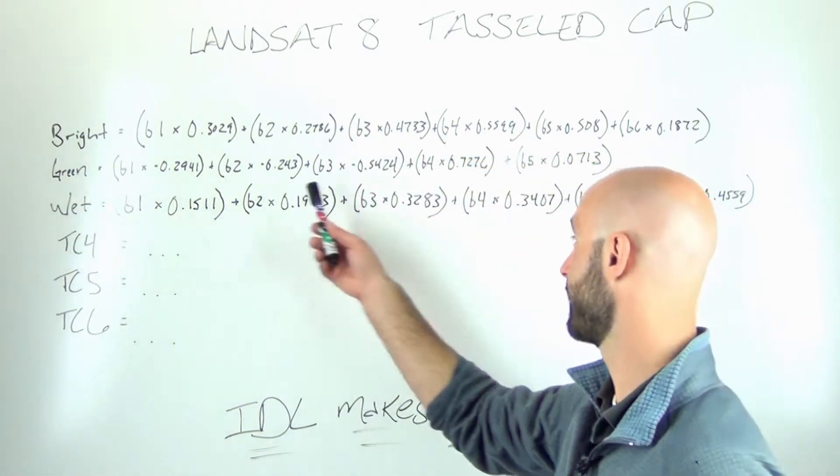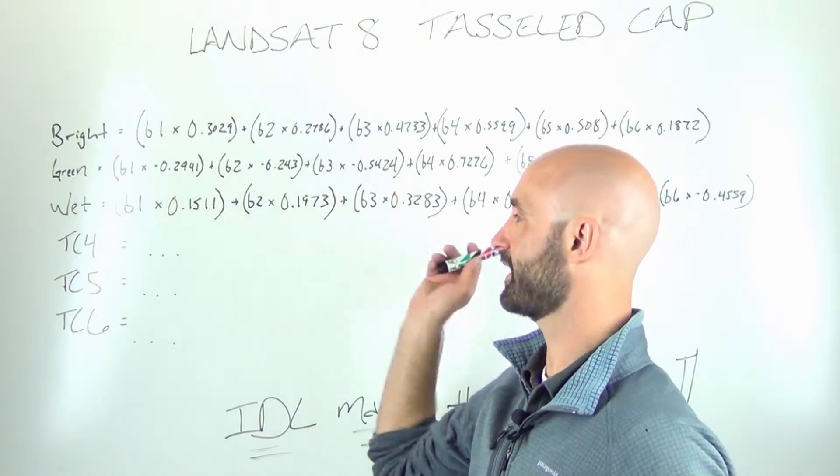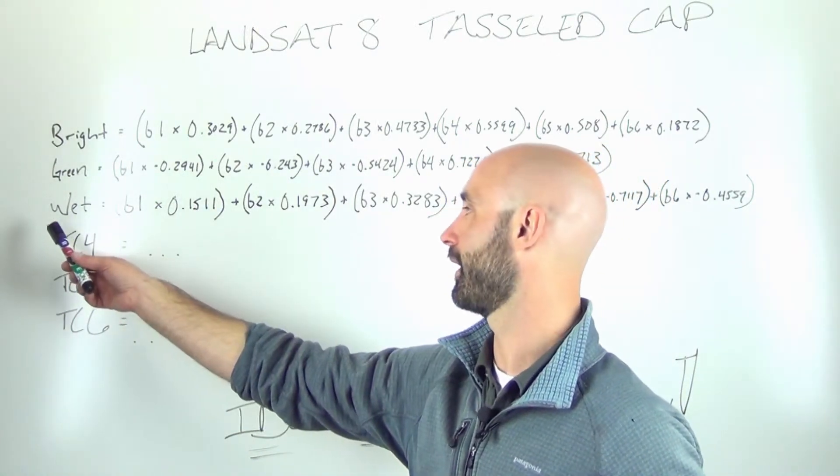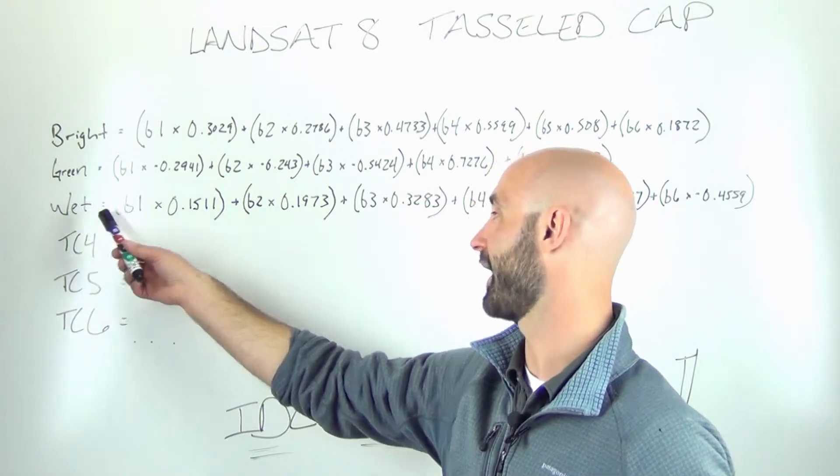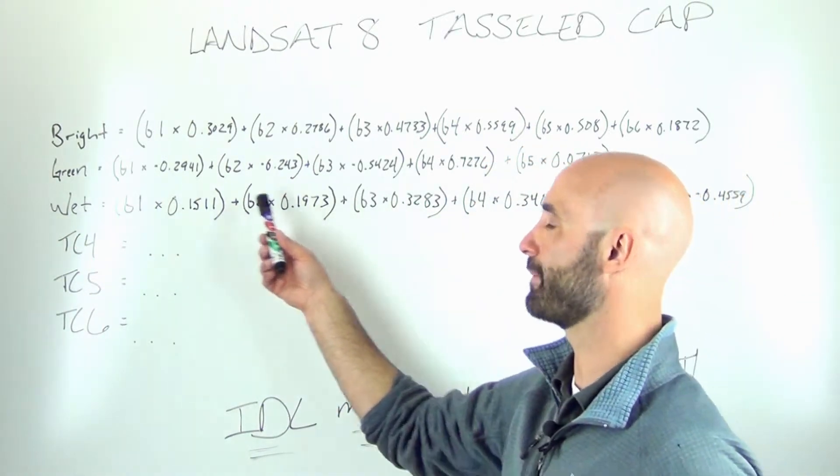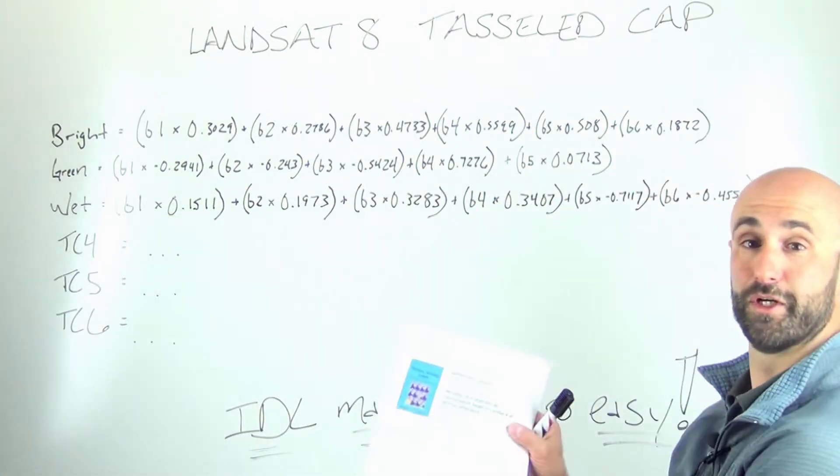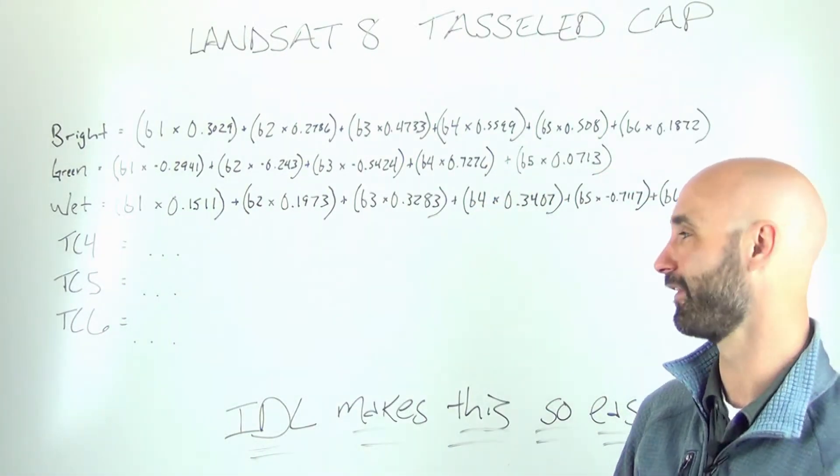The most vegetated pixels are highlighted in the second band, and then the third band here is the wetness band. In this third band that's calculated, any wet pixels are highlighted. There's also three other bands that you can read about in this paper that you can Google online.